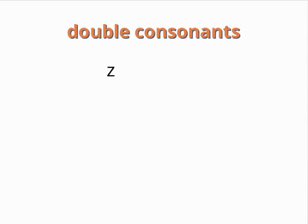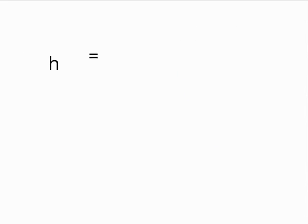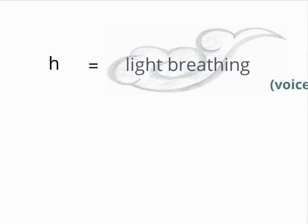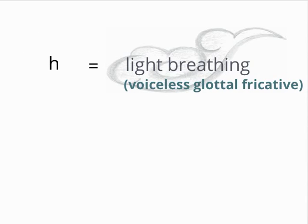Z is pronounced like DZ in English — for example, zeugma. The consonant H is also a bit odd because in Latin it represents a light breathing, technically called a voiceless glottal fricative.